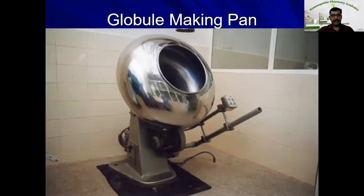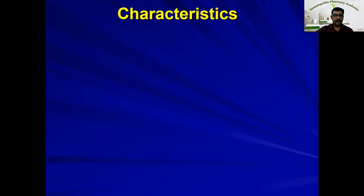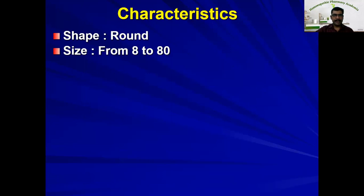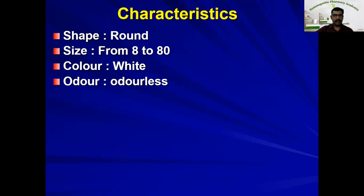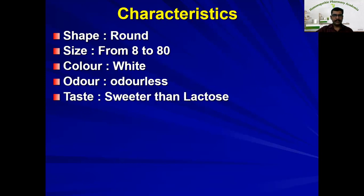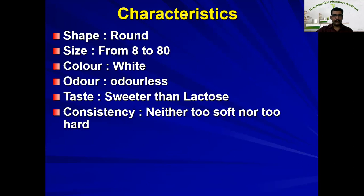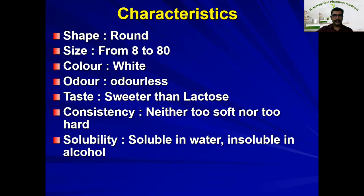The instrument used is known as a globule-making pan, also called a tablet cutting machine or pill tube. The characteristics of globules are: round and globular in shape; size varies from 8 to 80; color is white; odorless; sweeter than lactose; consistency is neither too soft nor too hard; soluble in water but insoluble in alcohol; melting point is 160 degrees Celsius.